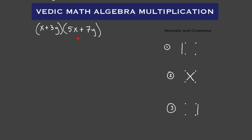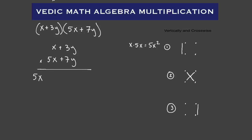Next: X plus three Y times five X plus seven Y. First thing, we're going to set this up vertically — X plus three Y times five X plus seven Y. Step number one, just straight down the left side: X times five X gives us five X squared. That's our first term: five X squared.